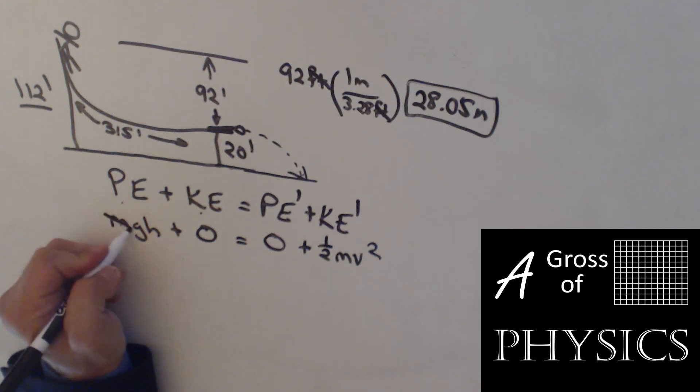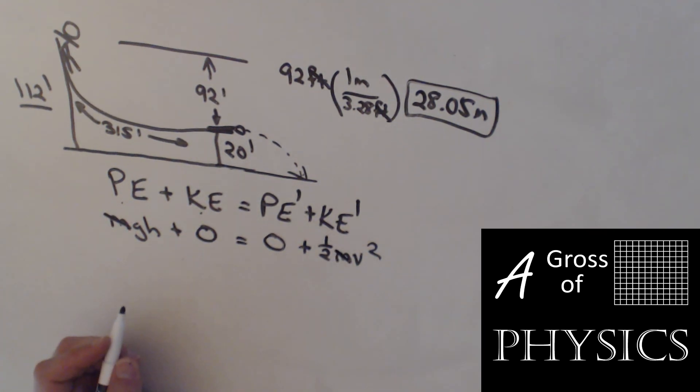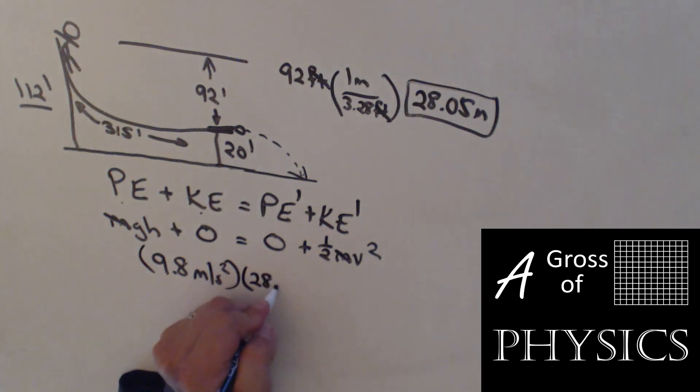Now, since we didn't know the mass of the skier, it's okay because every term we're left with has an m in it. g is 9.8 meters per second squared. The height is 28.05 meters, because all we're concerned about is the change in height equals one-half v squared. So all we have to do is put 9.8 times 28.05, set that equal, divide it by 0.5, and then take the square root. And our speed leaving the launch is 23.45 meters per second.